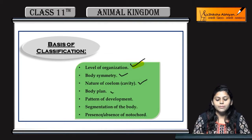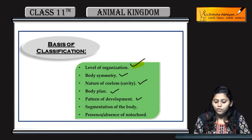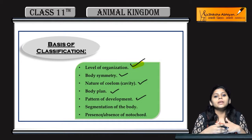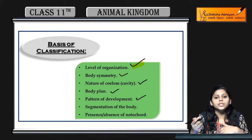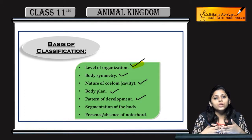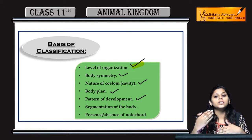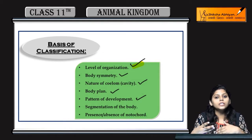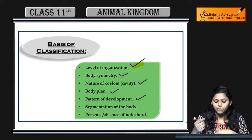Body plan and pattern of development - when there is embryonic development, different layers also develop. If there are two layers, they are called diploblastic; if there are three layers, they are called triploblastic.